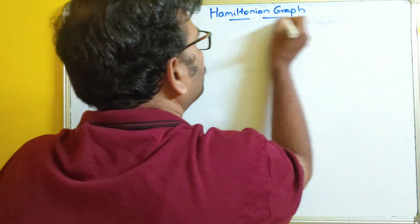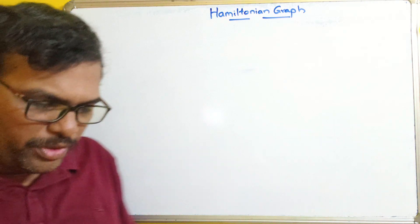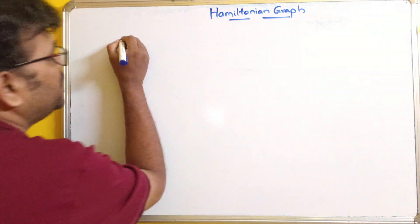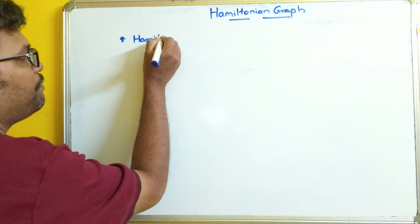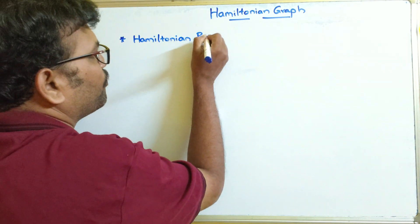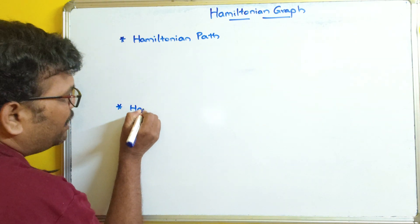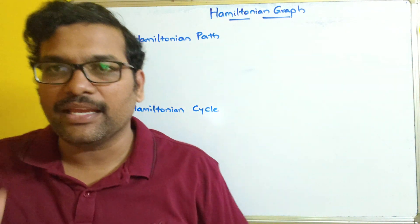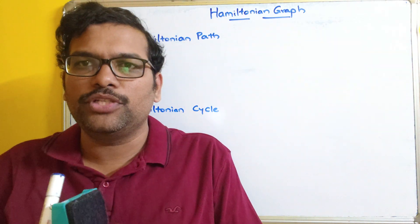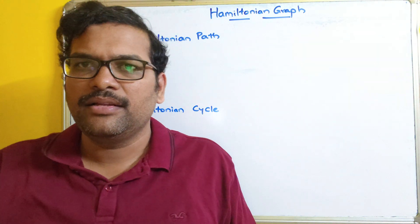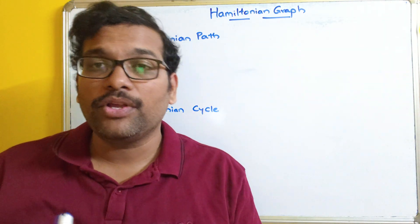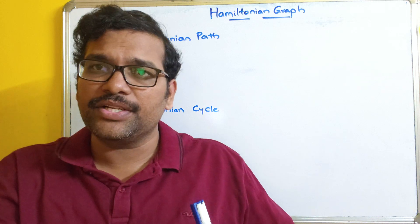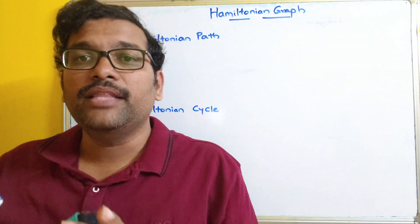Before going to Hamiltonian graphs, we need to understand two concepts: Hamiltonian path and Hamiltonian cycle. We already know the difference between path and cycle. When we start from one position and visit different places moving towards the destination, that is a path. And when we start from one position, visit all destinations, and come back to the source, that is called a cycle.